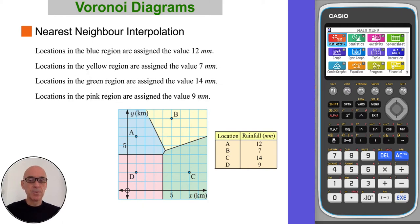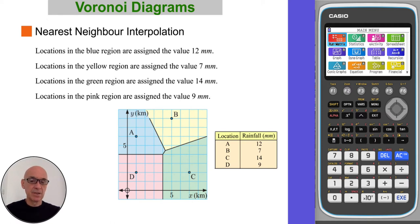Locations in the blue region are assigned the value 12 mm of rainfall. Locations in the yellow region are assigned the value 7 mm. Locations in the green region are assigned the value 14 mm. And locations in the pink region are assigned the value 9 mm of rainfall.